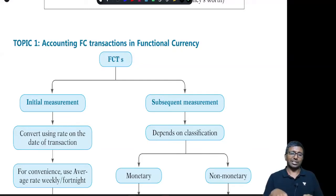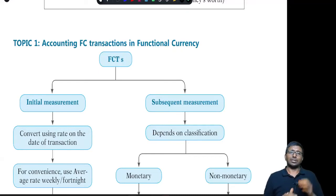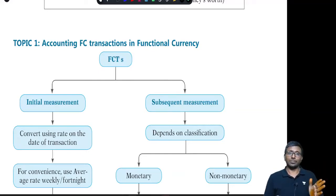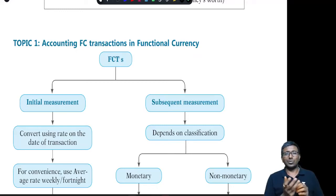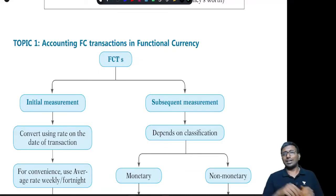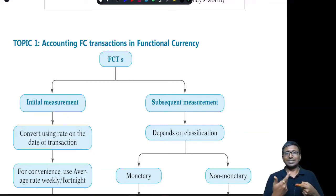For initial recognition — when the transaction takes place on that date, you are supposed to use the rate on the date of transaction. For convenience, you can take an average — generally weekly, fortnightly, or monthly average maximum, not yearly average. When the transaction recognition took place on one date and settlement happens on another date, the difference in the foreign currency rate is supposed to be transferred to profit and loss only, nowhere else.